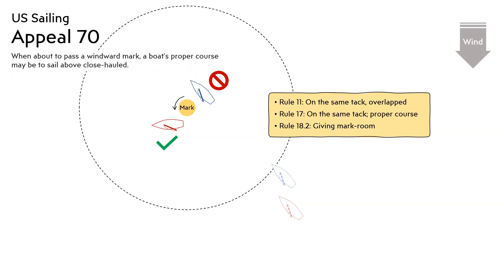In summary, when about to pass a windward mark, a boat's proper course may be to sail above close-hauled.